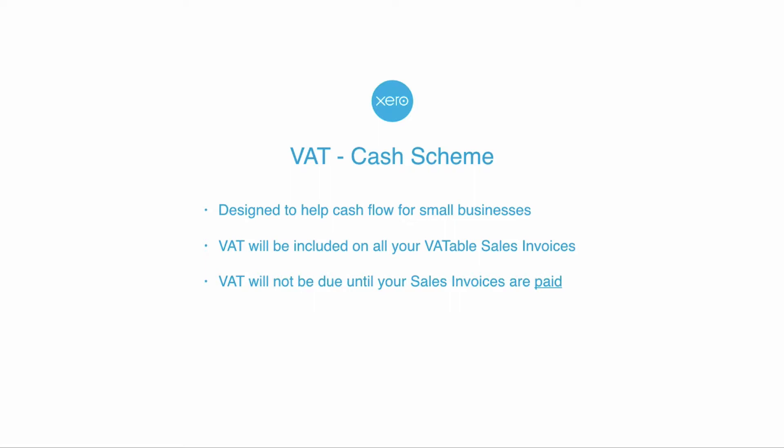Next, the VAT cash scheme. What's the difference between the accrual scheme and the cash scheme? Well, the cash scheme is designed to help cash flow for a small business. If you are issuing sales invoices and waiting a long time to get paid, you're penalised if you've got to pay over the VAT to HMRC. When you issue a sales invoice, you will still include VAT — there's no difference there. But when you come to prepare your VAT return, the VAT for your sales invoices will not be due unless your sales invoices are being paid. So if your VAT quarter ends the 31st of March and you produce a sales invoice dated the 31st of March, it will not fall into that VAT quarter — it will fall into the VAT quarter when you actually receive payment.